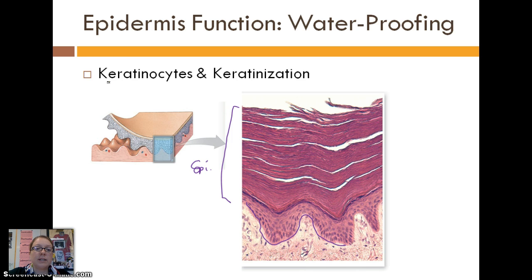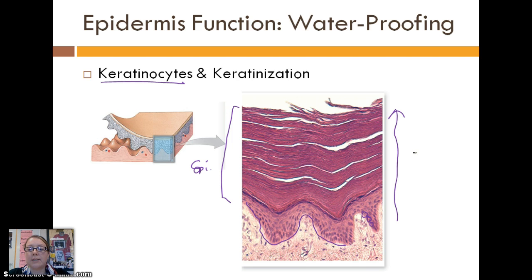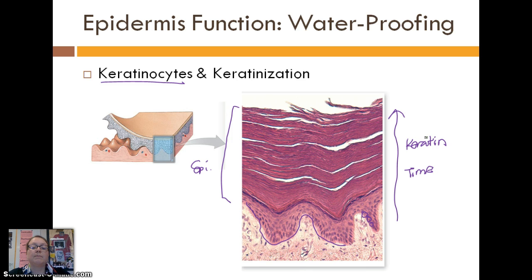Waterproofing is done through the work of special cells called keratinocytes. Those keratinocytes start way down at the bottom of the epidermis and are consistently and constantly dividing. As time goes on, those cells get pushed farther and farther to the surface. As they move up, they produce a chemical called keratin, which slowly fills up those cells, and their organelles get discarded — leaving just that empty shell. That's why our skin is so waterproof: those top layers of cells are all filled with keratin.